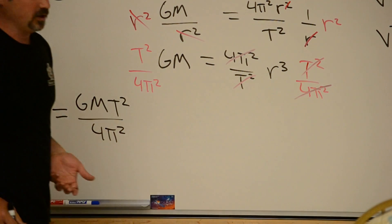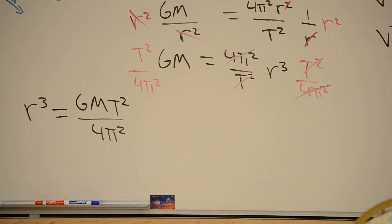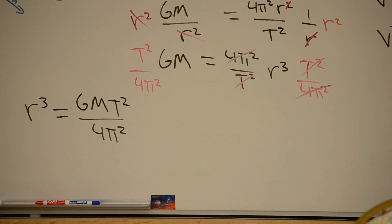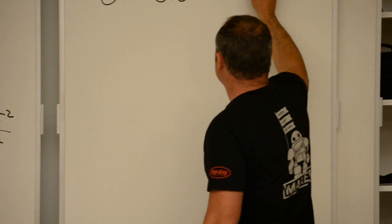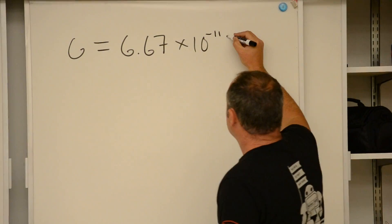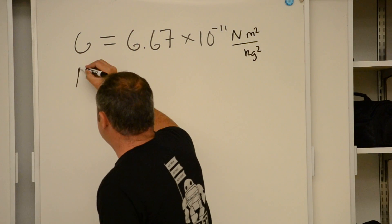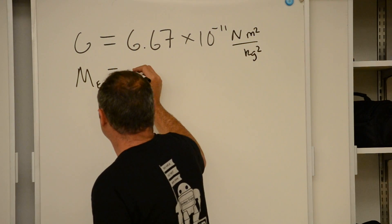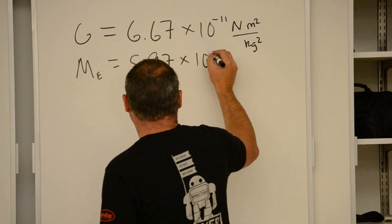So now it's just a matter of plugging in. Well, those values are universal constant of gravity, 6.67 times 10 to the minus 11 newtons meters squared over kilograms squared.